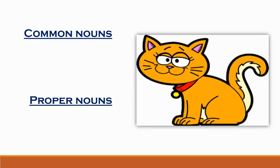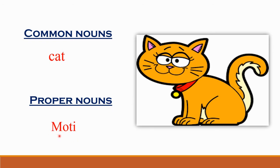What can you see in the picture? This is a cat. We gave the name Moti to this cat. So, a particular name given to a person, place, animal, or thing is called a proper noun. Moti is a proper noun, and a proper noun always begins with a capital letter — M in Moti is capital. Remember: a proper noun always begins with a capital letter.